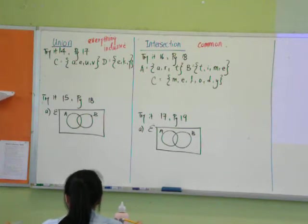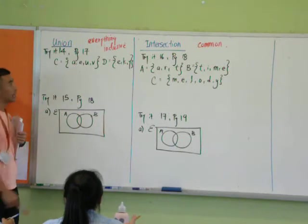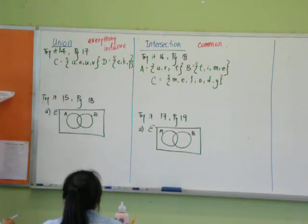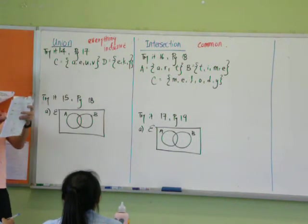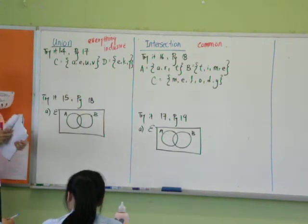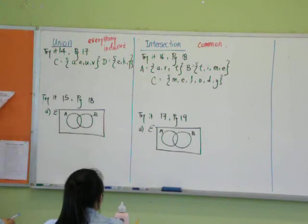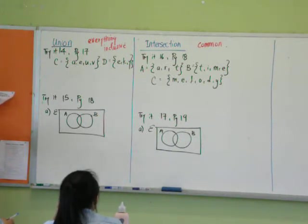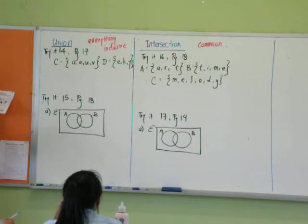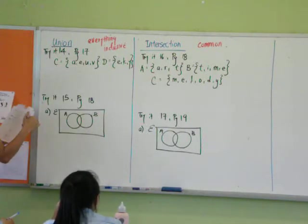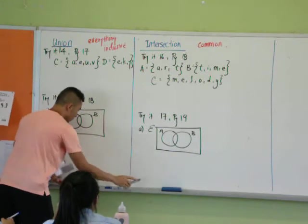So I'm going to use this example. Look here, try it on page 17. There are two sets given here, am I right? If we are talking about union of C and D as given in the question, what are we looking out for? What are we looking out for? Yes? Everything inclusive. Everything inclusive. So how would you represent your answer? Together. Together? Yes, now together.